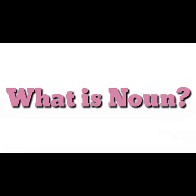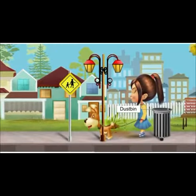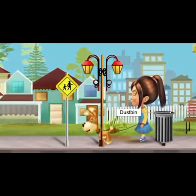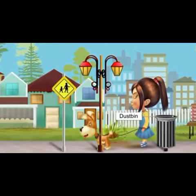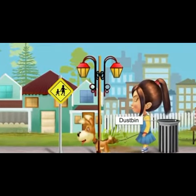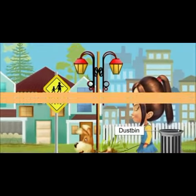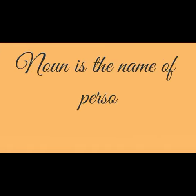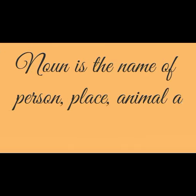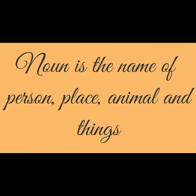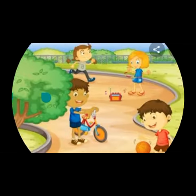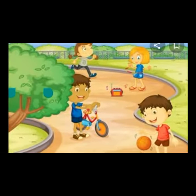Do you know what is noun? How do you call the things around you? Everything around you has a name, and that name is called noun. Noun is a name of a person, place, animal, and thing. Look at this picture — what do you see in this picture?